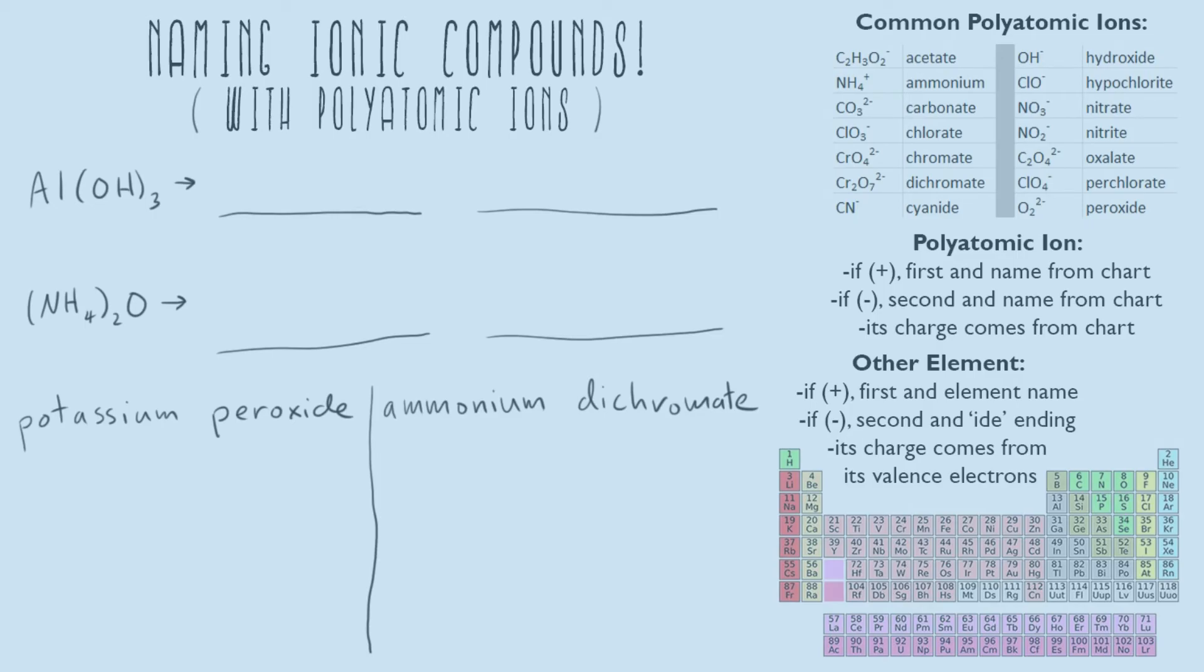In this video I'll be going over naming of ionic compounds with polyatomic ions. Polyatomic ions are usually just given to you, sometimes you might have to memorize them in your textbook or if you want to look it up they're online.